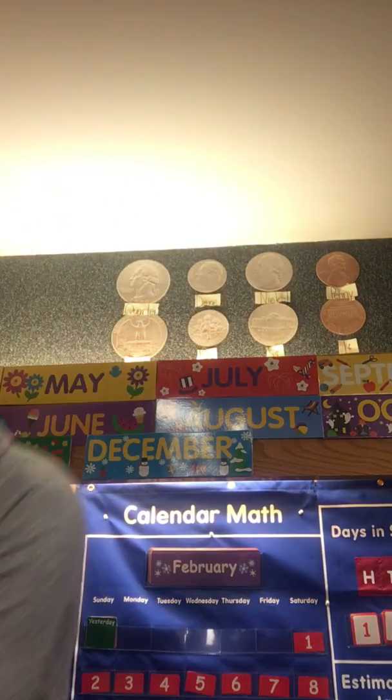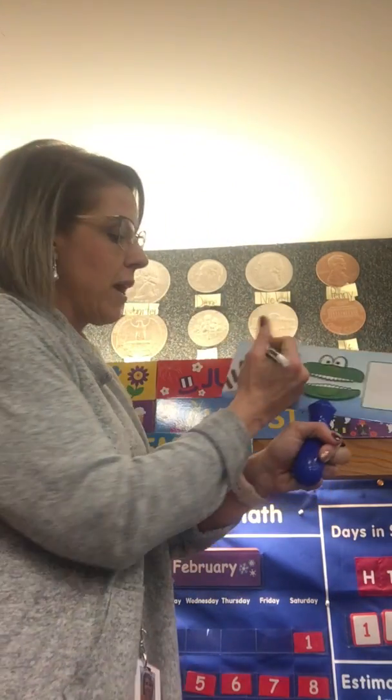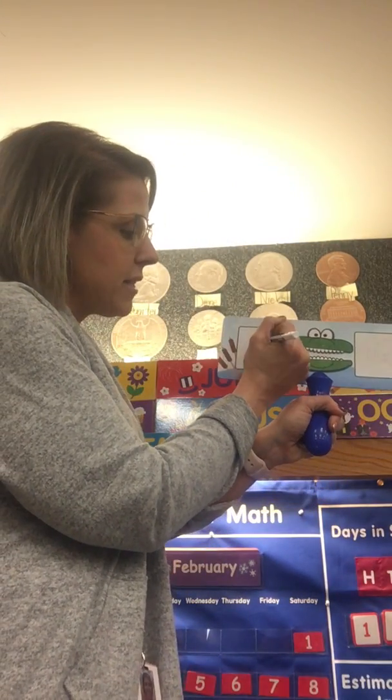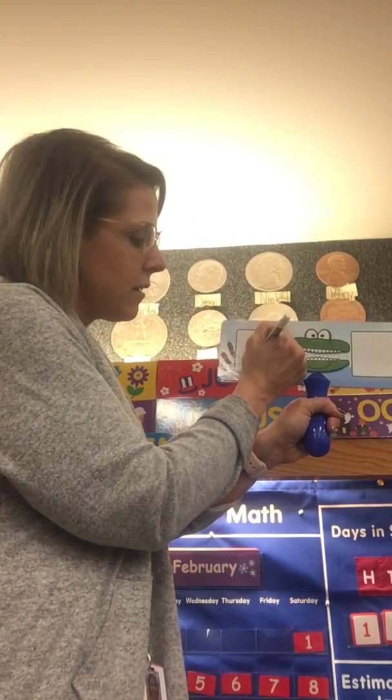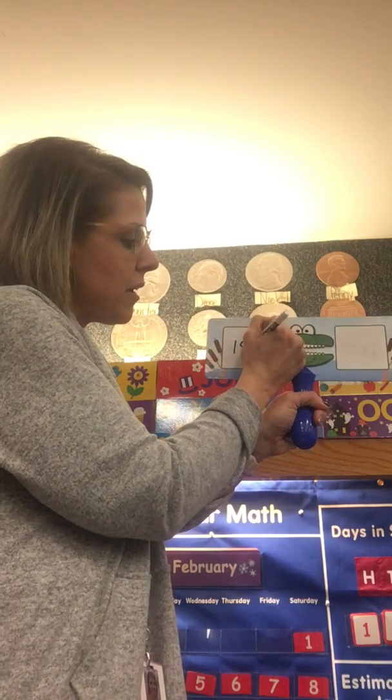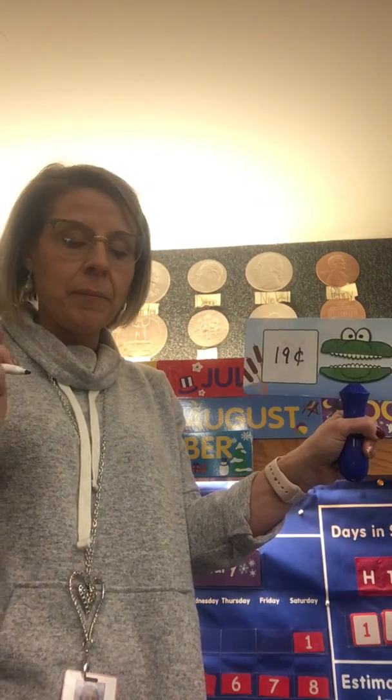So when I go to write that, I would write the number nineteen and then our cent sign, which is a C with a line through it.